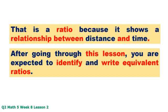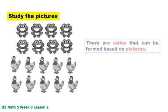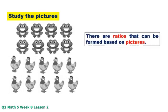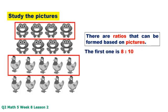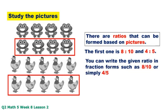After going through this lesson, you are expected to identify and write equivalent ratios. Study the pictures. There are ratios that can be formed based on pictures. The first one is 8 to 10, and 4 to 5. You can write the given ratio in fraction form such as 8 to 10 or simply 4 to 5.